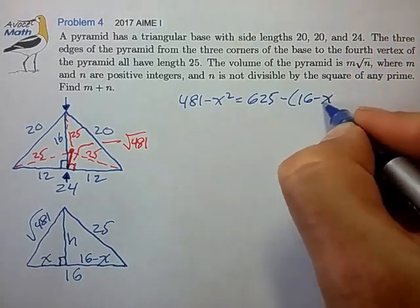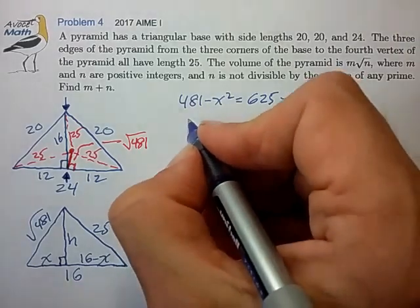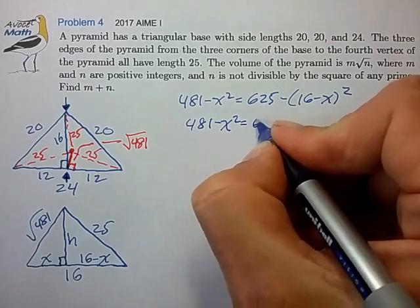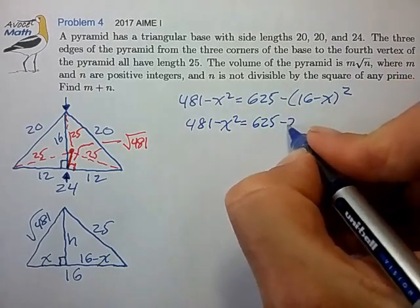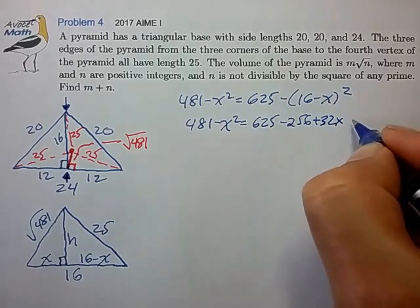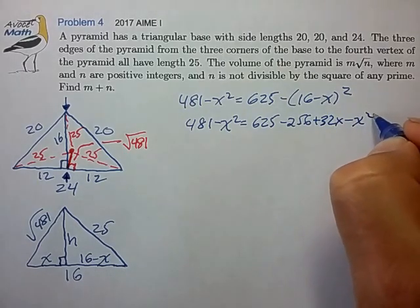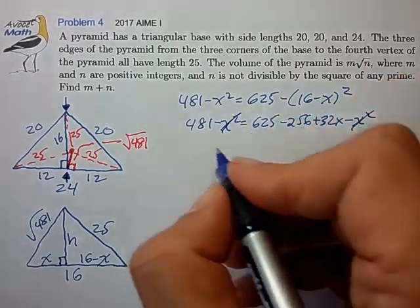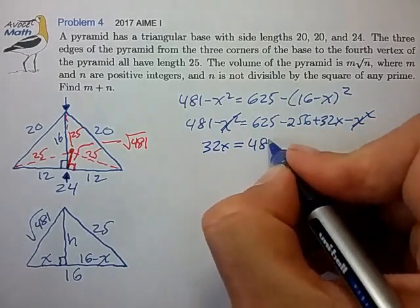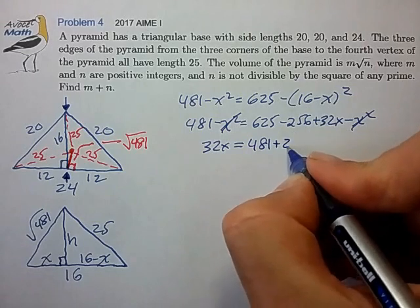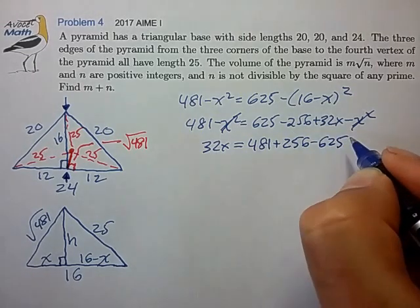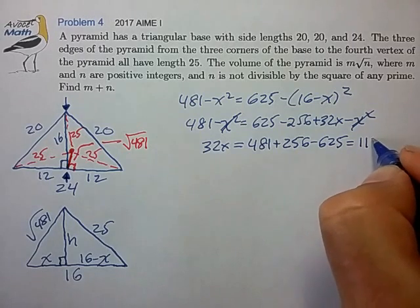625 minus x squared. Let's expand that. Plus 32x minus x squared. X squareds drop out. 32x is 481 plus 256 minus 625.